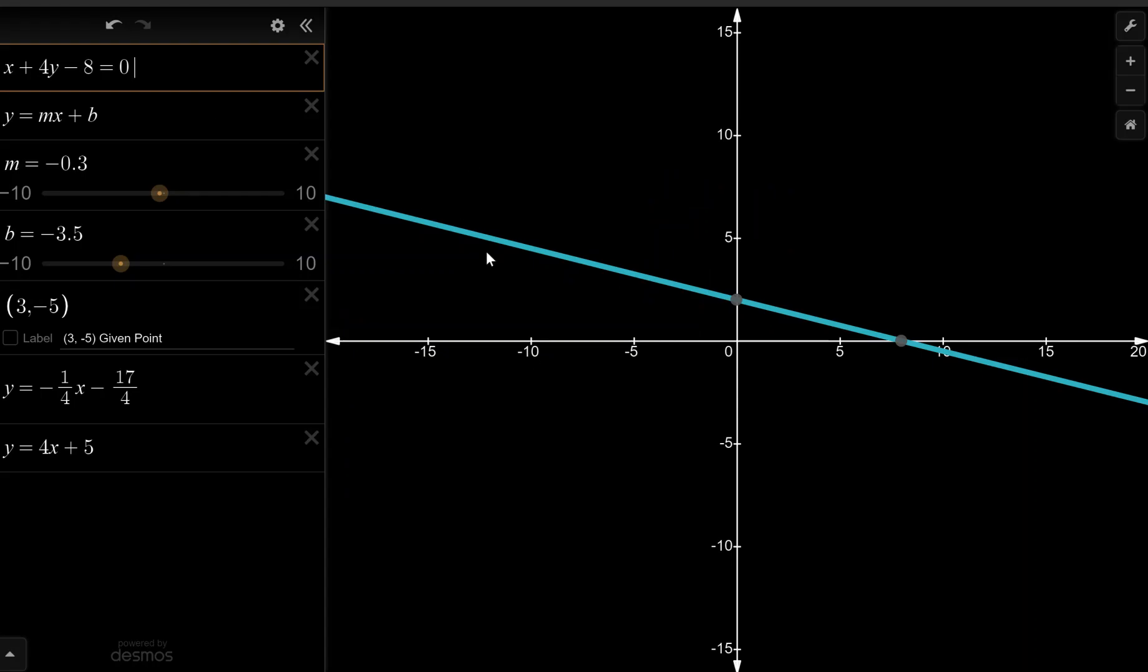So let's look. This blue line right here is the line x plus 4y minus 8 equals 0. So this is the line we're looking at. And we want to find the slope of a line that's perpendicular to this blue line. And perpendicular means it crosses it at a 90-degree angle.